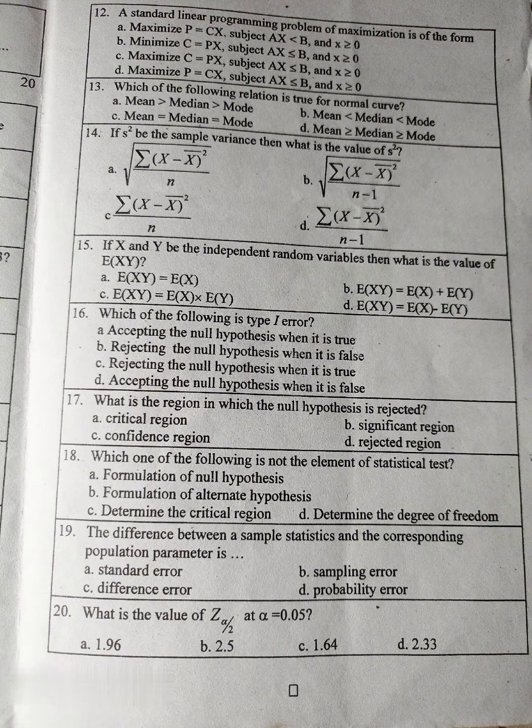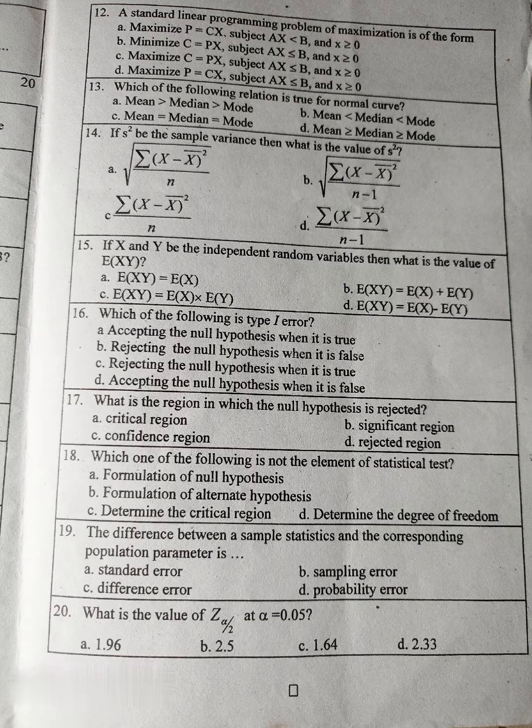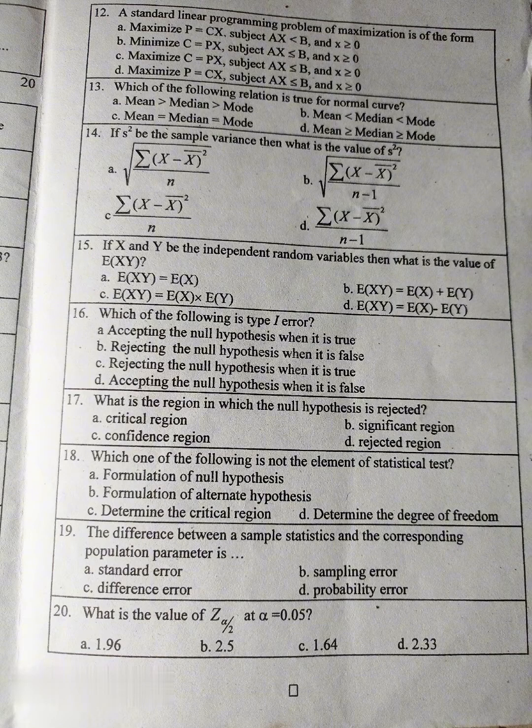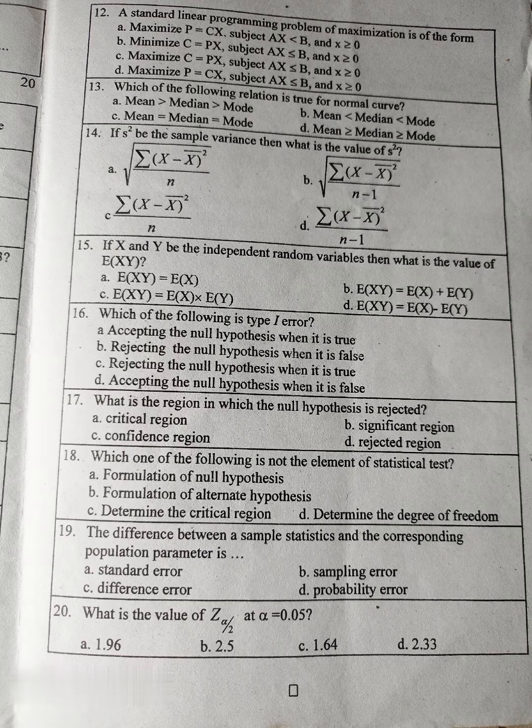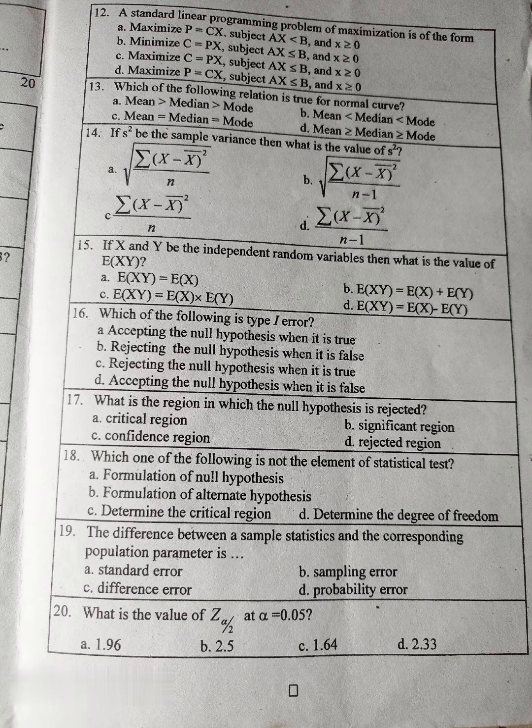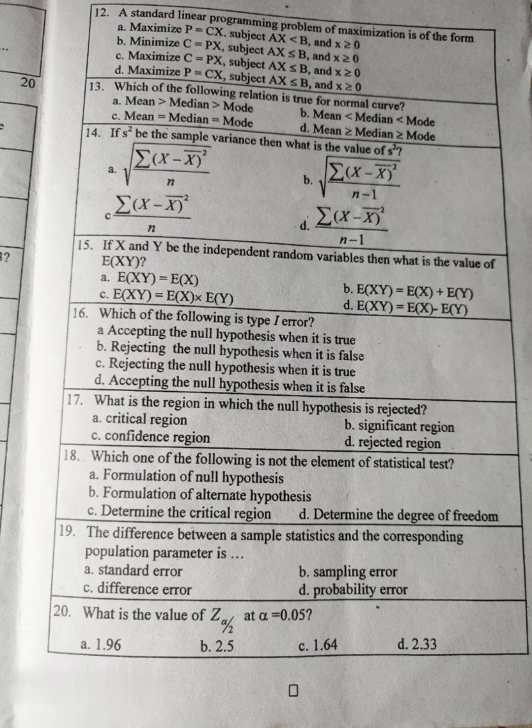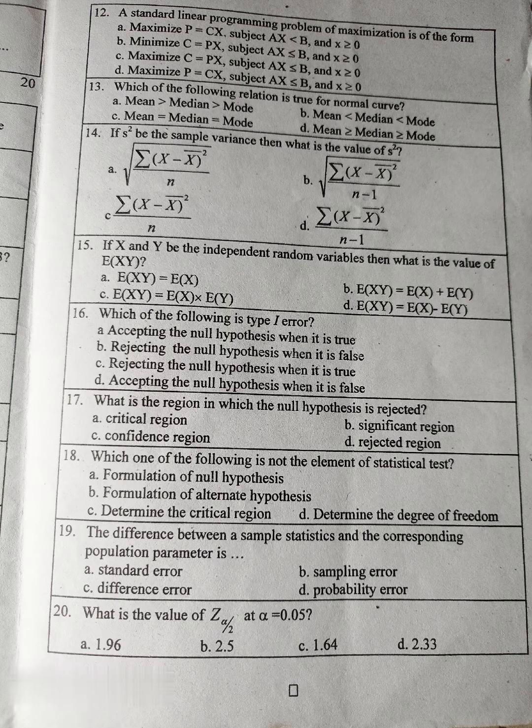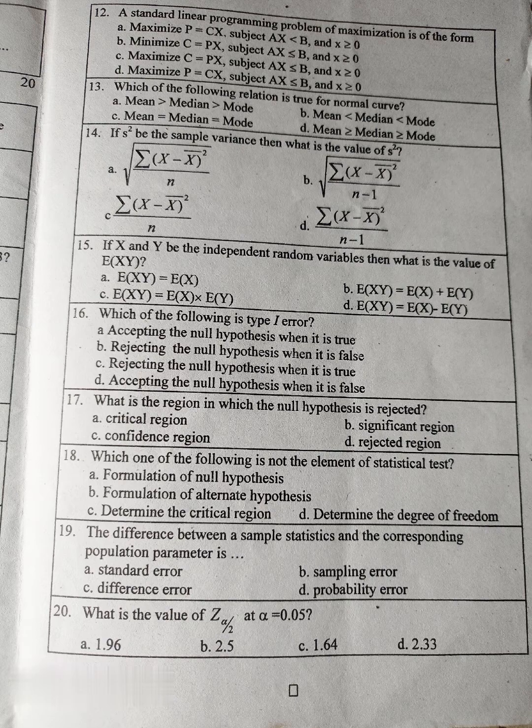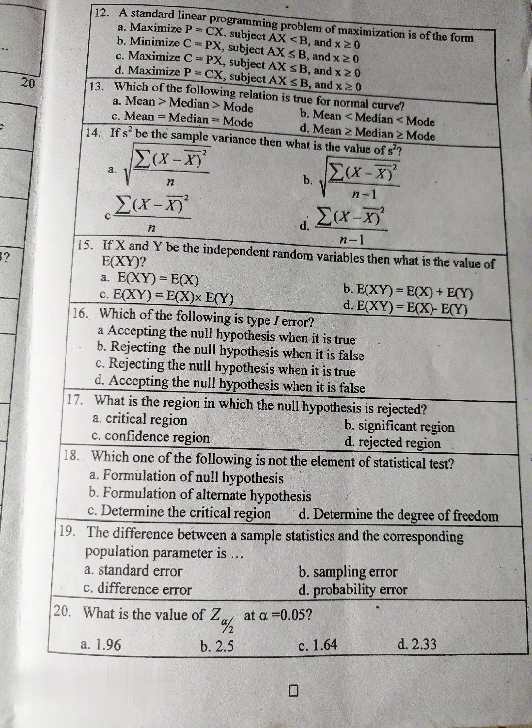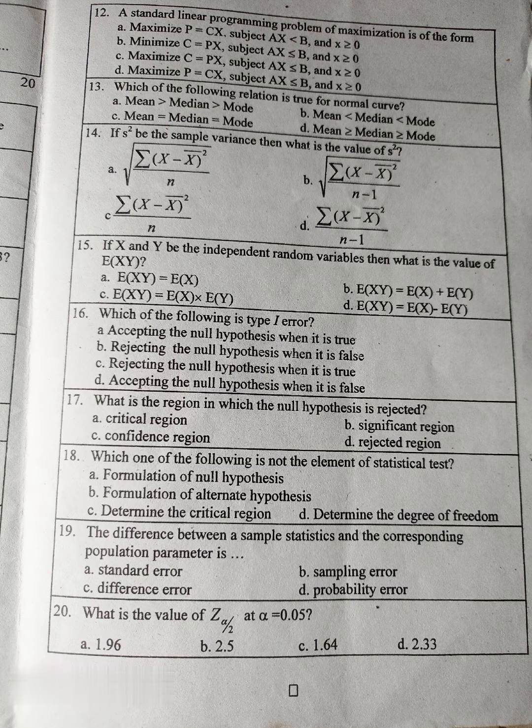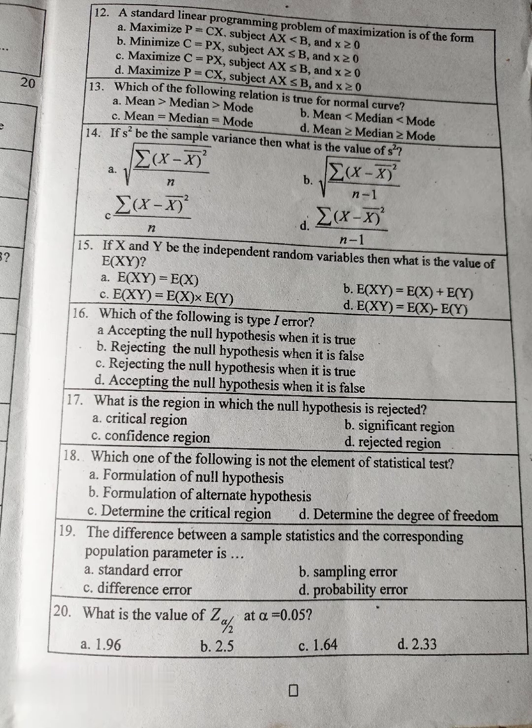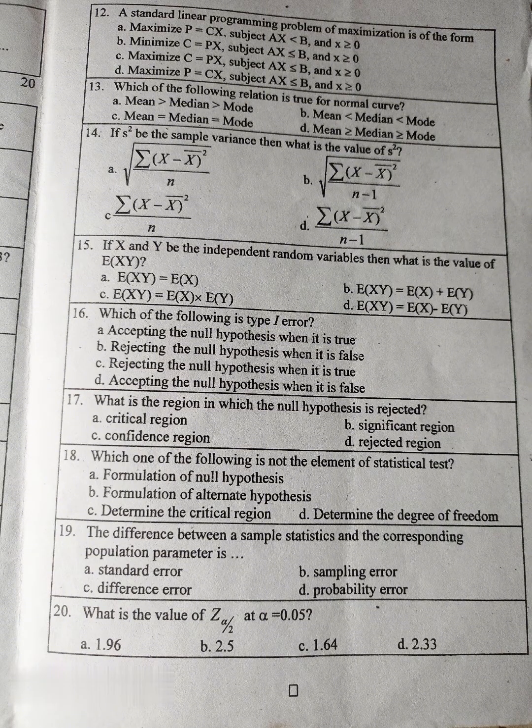Question number 15: If X and Y be the independent random variables, then what is the value of expectation of XY? A. expectation XY equal to expectation X, B. expectation XY equal to expectation X plus expectation Y, C. expectation X into Y equal to expectation X into expectation Y. Question number 16: Which of the following is type 1 error? A. Accepting the null hypothesis when it is true, B. Rejecting the null hypothesis when it is false, C. Rejecting the null hypothesis when it is true, D. Accepting the null hypothesis when it is false.